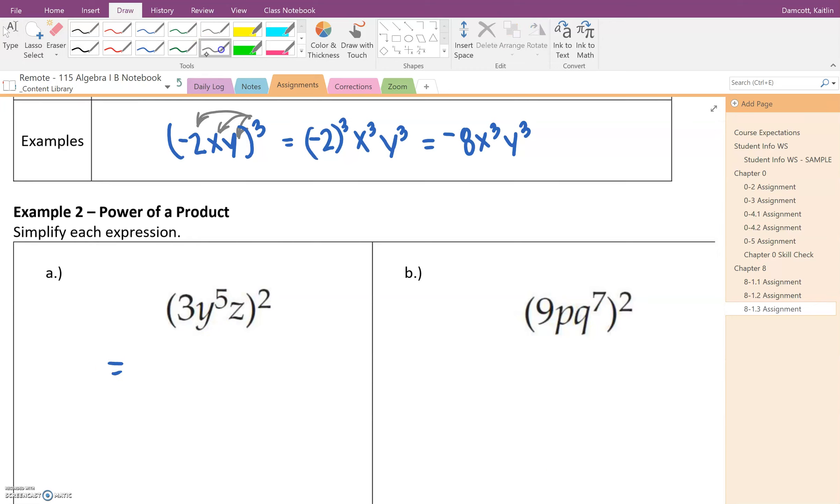So this is what this is going to look like. So the first thing that we want to do is we want to distribute to each factor. So what that means is we're looking at 3 squared, then we're going to have y to the fifth squared, and then z squared.